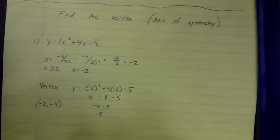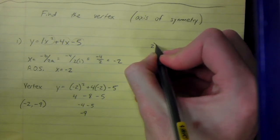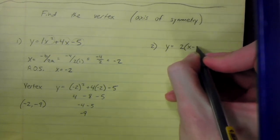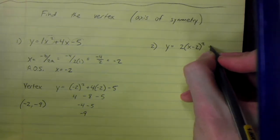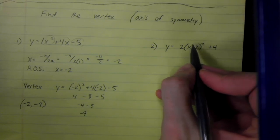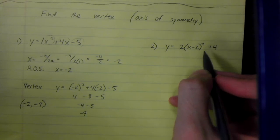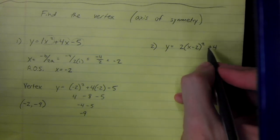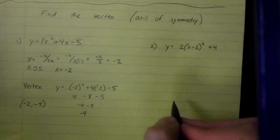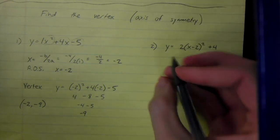If it's in standard form, you may also see it written in something called vertex form, which looks something like this. Notice you have a binomial squared — there's no linear term, nothing with just an x by itself. It's all things that are squared or constants. When your equation is in this form, finding the vertex is super easy.